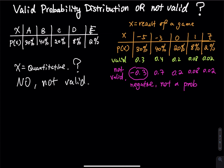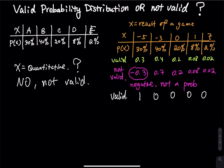What if the probability of getting a negative five is 1, and the rest are all zero? Is this valid? The answer is yes. A probability can be zero. Think about it — if every single card in the box has negative five written on it, no matter which card you pick, you always get negative five. So the probability of getting negative five is 100%, and this distribution is valid.